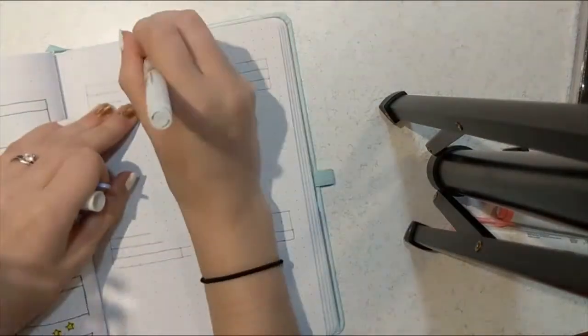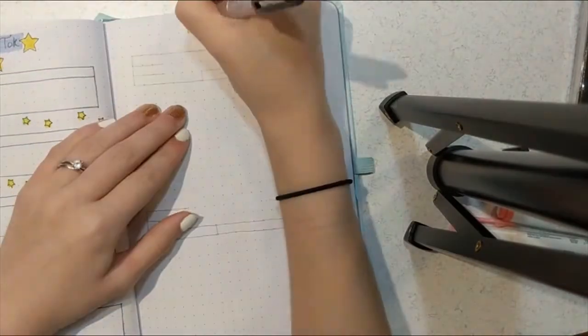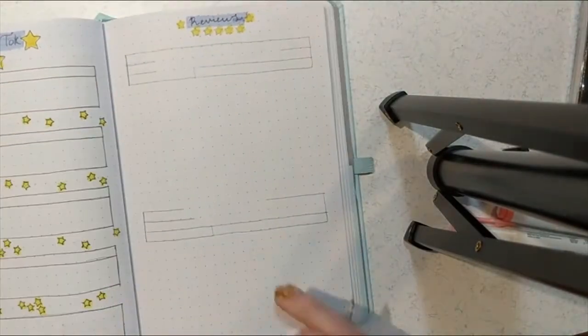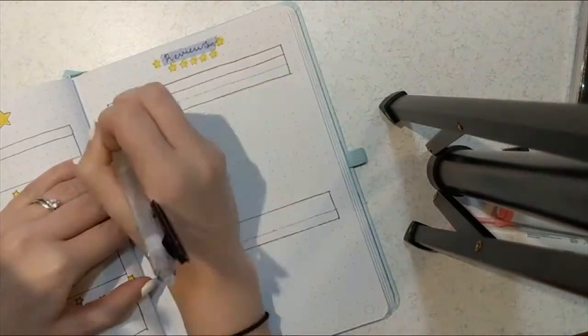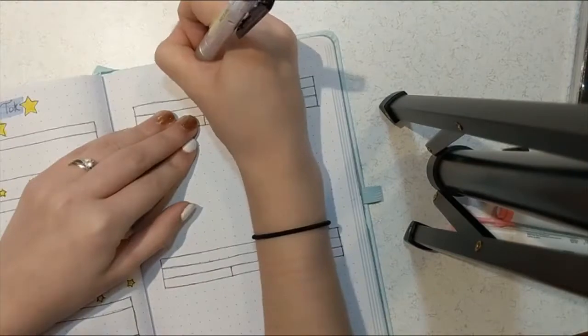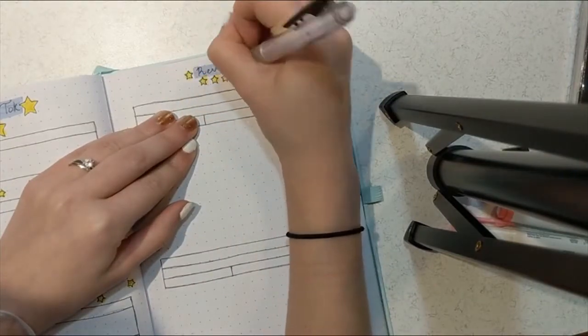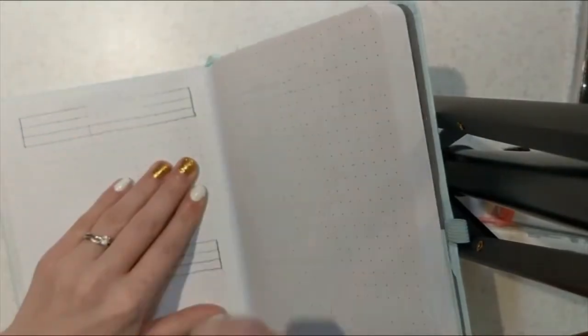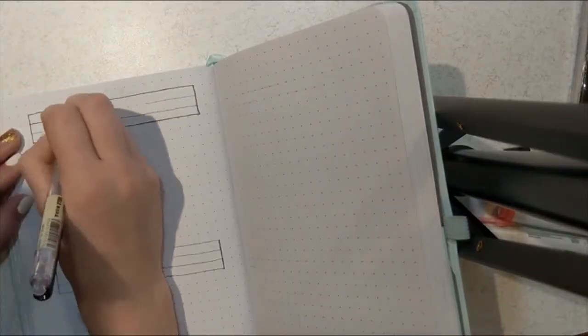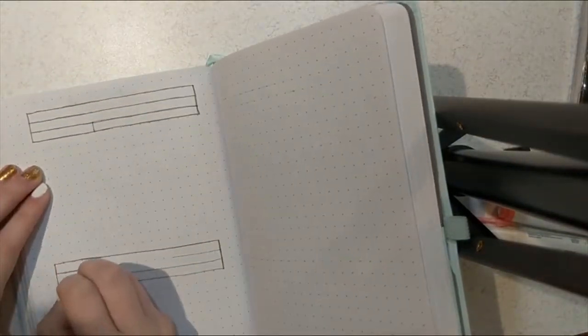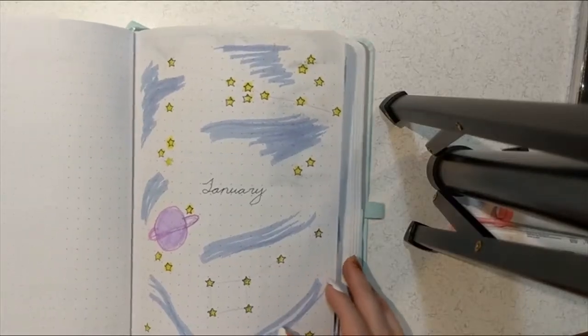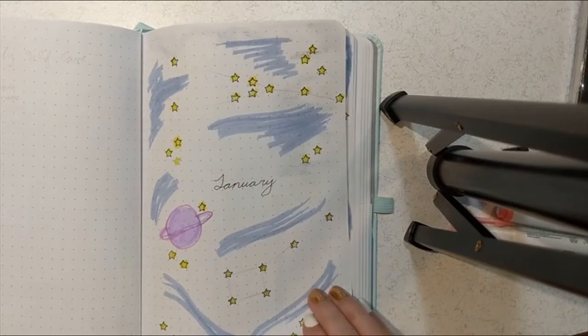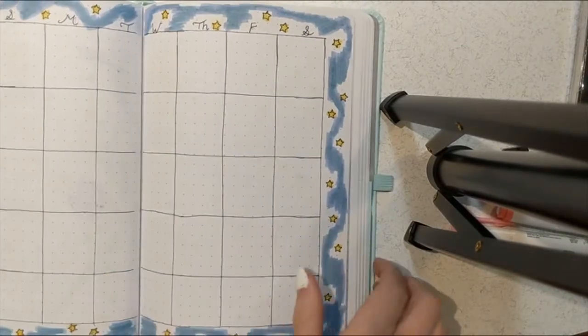And my last section of my bullet journal is always my reviews. So here is where I write the title, the author, how many stars I rated it, and now I'm also writing down the publisher just so that I can keep track and keep it a little more organized. And I give myself some space to write my thoughts. I only did the little boxes for the first couple of pages because I didn't want to waste pages for books that I end up not reading, but I just left it kind of open-ended for however many.